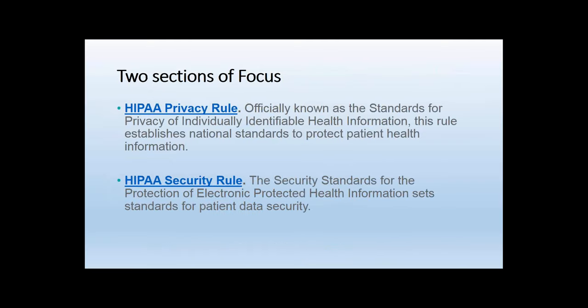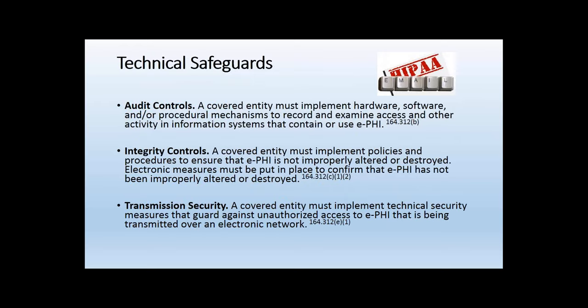There are two main sections of HIPAA to focus on for electronic messaging: the HIPAA privacy rule and the security rule. The security rule sets standards for transmitting electronic PHI. First, you must have audit controls — a trail showing exactly where information went, who received an email, what time it was opened, providing a very detailed record. If the federal government audits you, you'll need this. Next, integrity controls ensure information is not improperly altered, destroyed, manipulated, or changed.